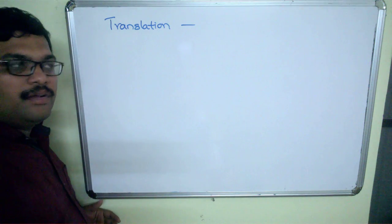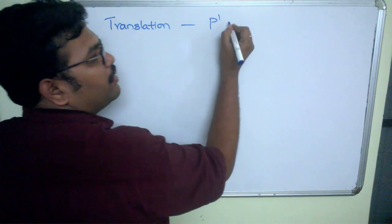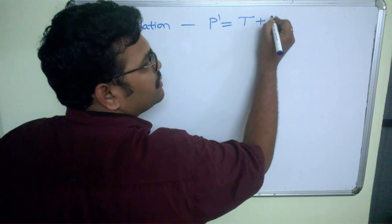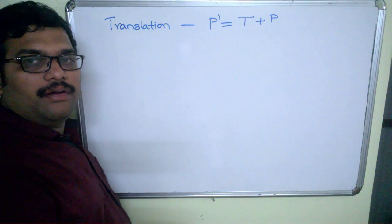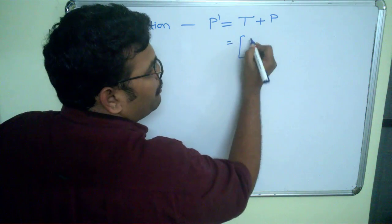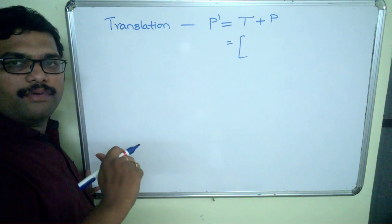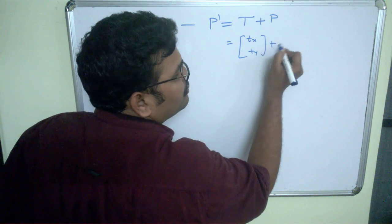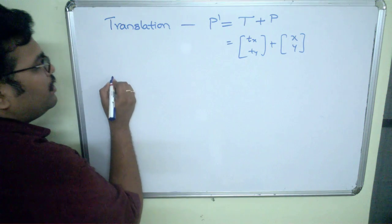Let us see the formulas derived in the previous session for these basic transformation functions. For translation, if P-dash is the new coordinate, it equals the translation parameters T plus old parameters P. In matrix format, this is written as tx and ty (translation parameters) added to the old parameters x and y.